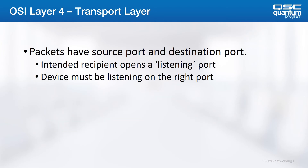Another important concept included in the transport layer is the idea of network ports. Almost every network device handles a number of different services and applications at once. Think of a network port as a receiving dock in a large warehouse. There might be 20 different ports, and each truck must be told where to drop off its merchandise so it gets to the right place. This is the same for network traffic. Every packet has a source port, the dock from which it left, and a destination port, the dock at which it should be dropped off.